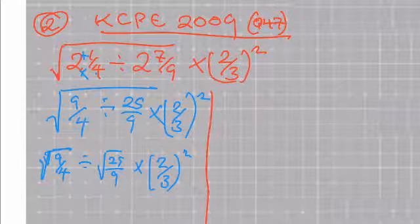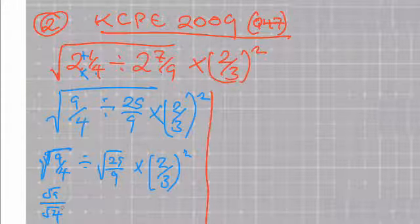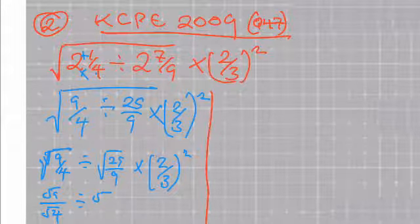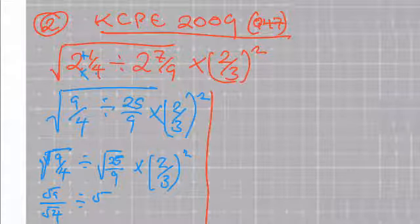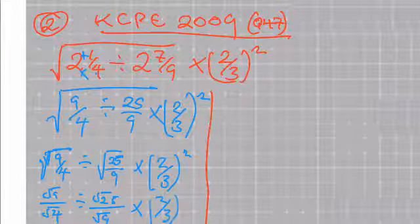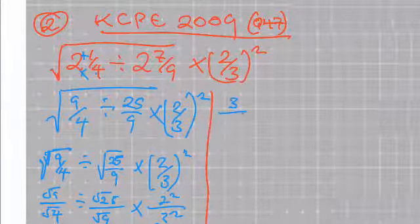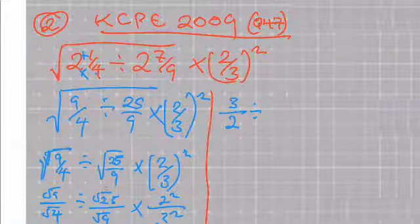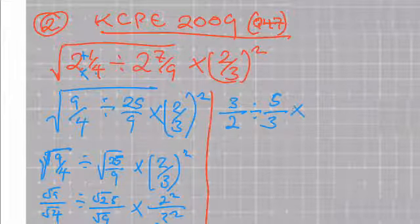Find the square root of the numerator and the square root of the denominator. That gives me the square root of 9 over the square root of 4, divided by the square root of 25 over the square root of 9, multiplied by the square of 2 over 3. So the square root of 9 is 3, the square root of 4 is 2, divided by the square root of 25 is 5 over the square root of 9 is 3, multiplied by 2 squared over 3 squared — which is 4 over 9.